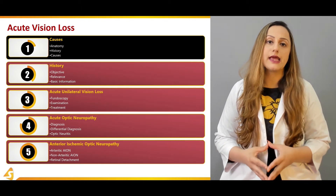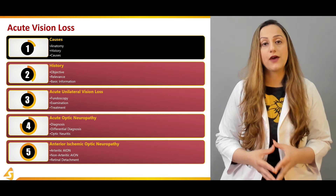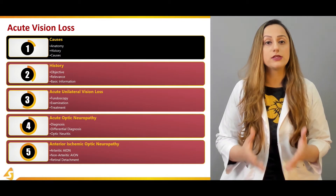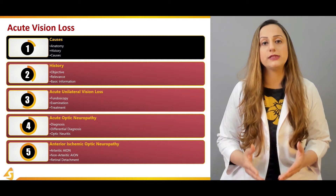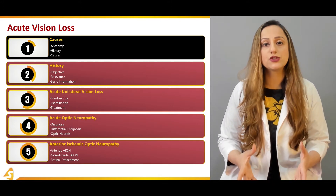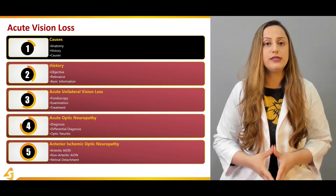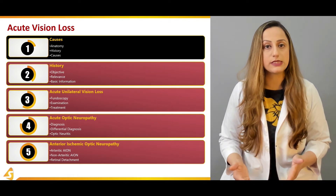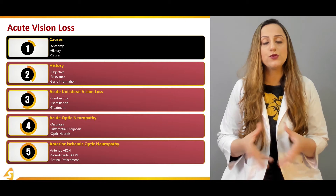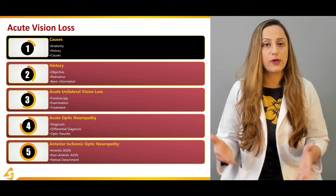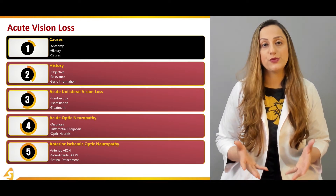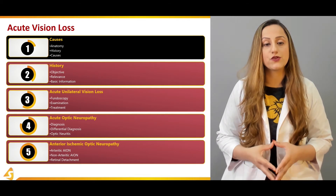Knowing the history of any disease is very important. A lot of research has been done to understand the condition of acute vision loss, its causative factors, and how we can narrow down the diagnosis by taking a complete history from the patient. We will also discuss how to make a differential diagnosis when a patient presents with acute vision loss in your clinic.